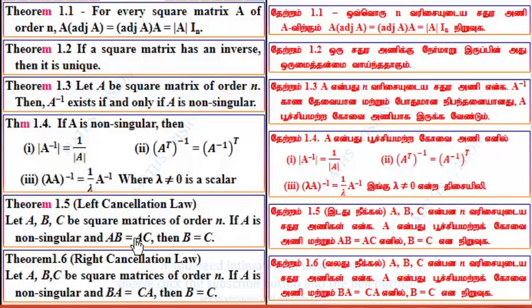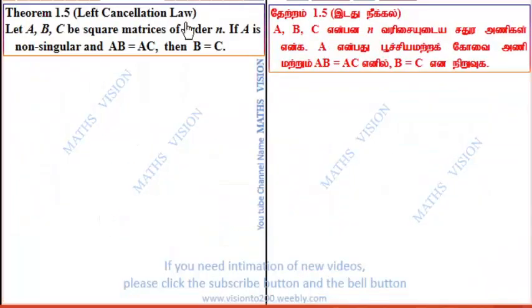Theorem 1.5, Left Cancellation Law. Let A, B, C be square matrices of order N. If A is non-singular and AB equals AC, then B equals C.